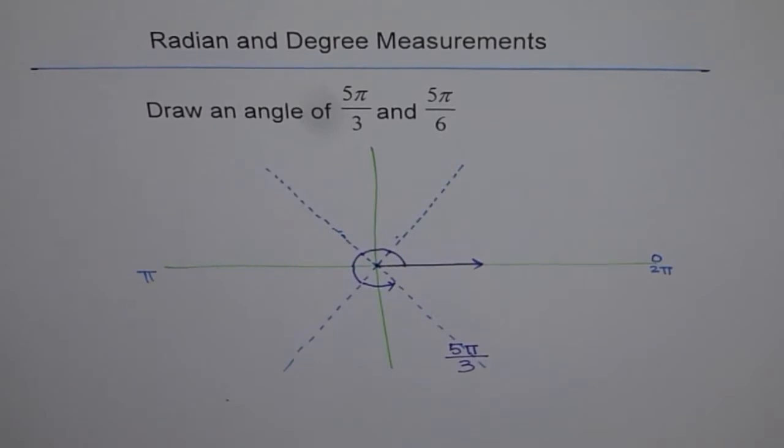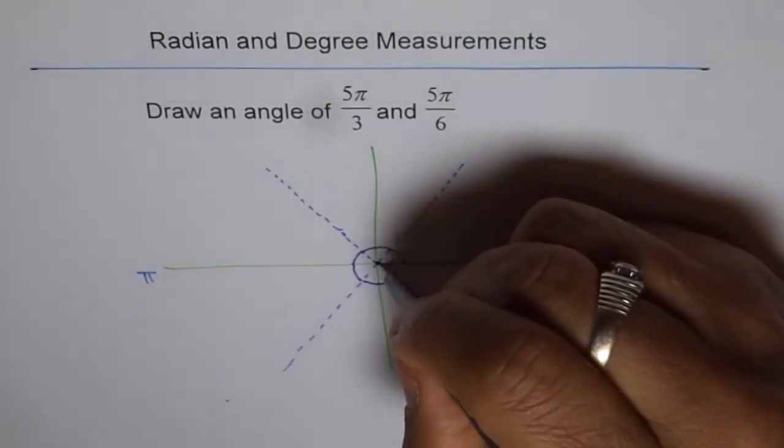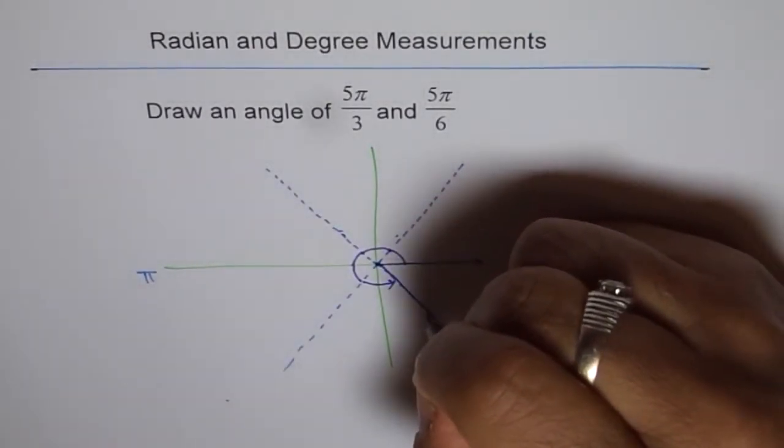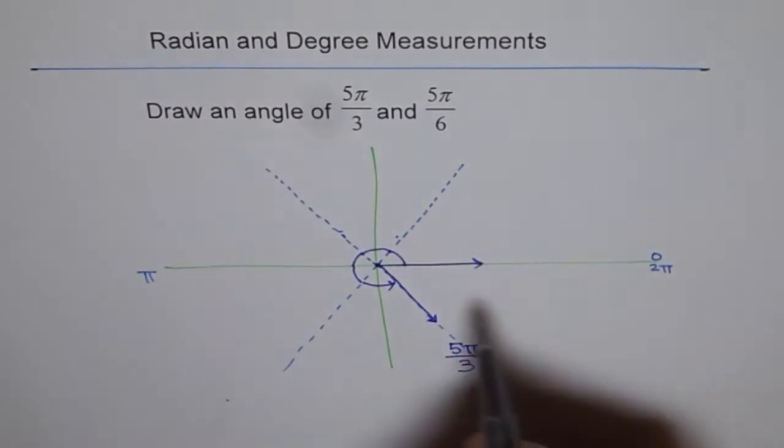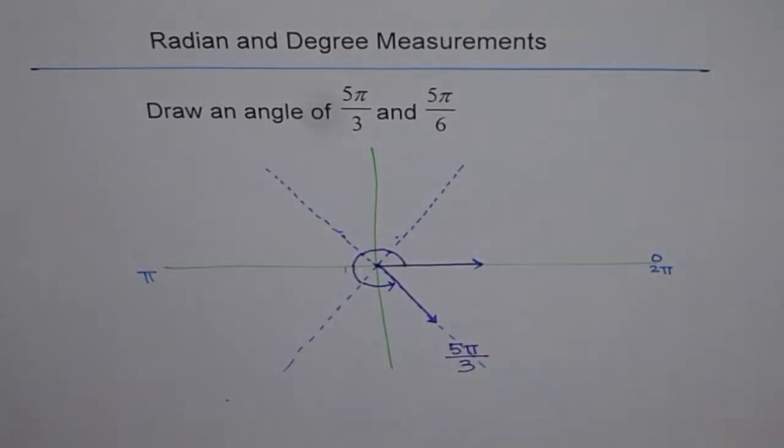So we'll connect this and that's our terminal arm. So this is the initial arm. That's the terminal arm and this angle is 5π/3.